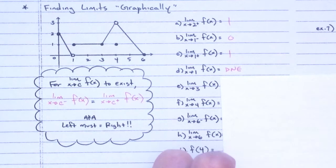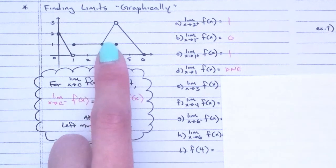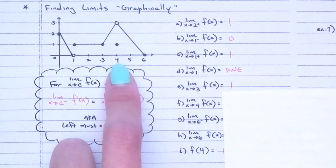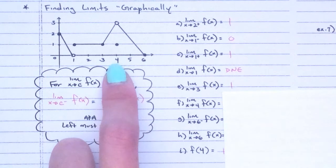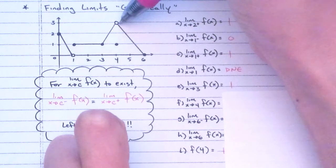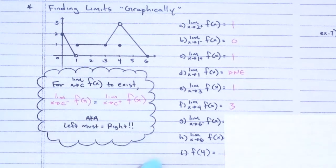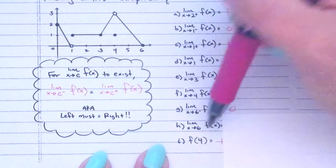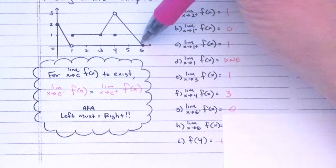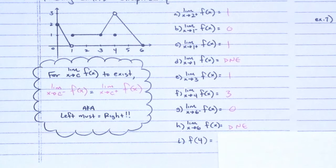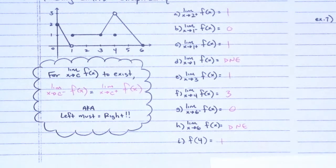At x = 3, the left limit is 1 and the right limit is 1, so the limit is 1. At x = 4, the left limit is 3 and the right limit is 3, so the limit is 3. At x = 6, the y value on the left is 0, but there is no right side, so the right limit does not exist and the overall limit does not exist. Note that f(4) — the actual y value at 4 — is 1.